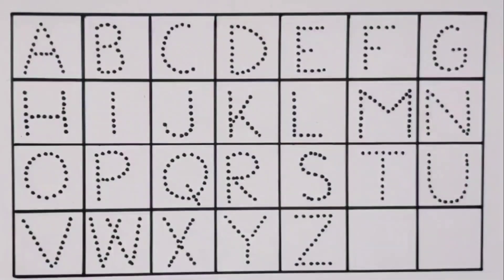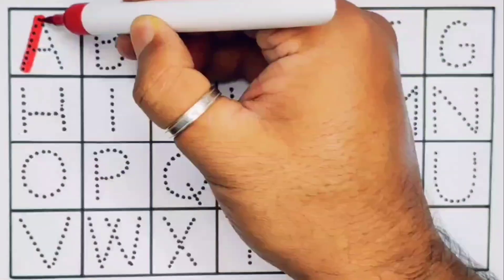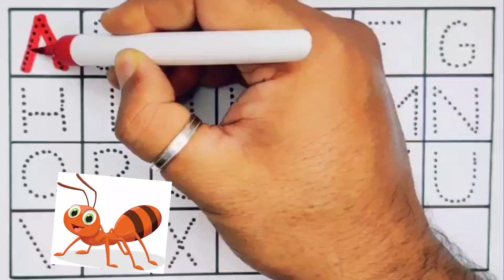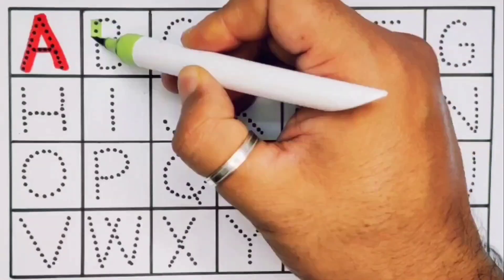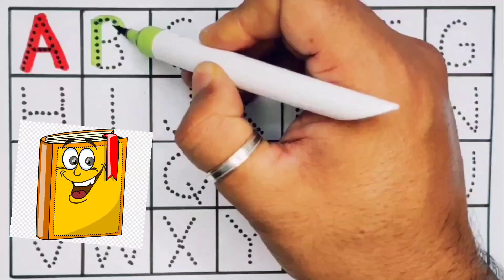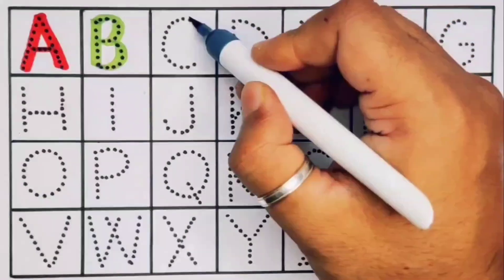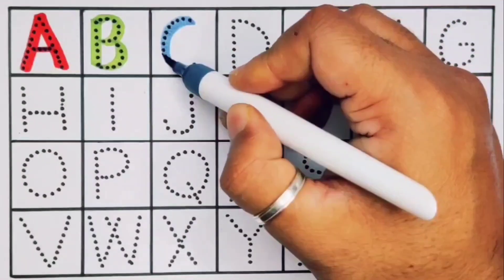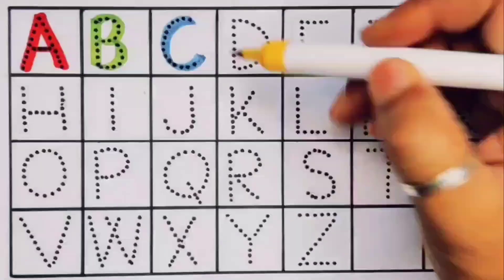First, A, A for ant. Next, B, B for book. Next, C, C for car. Next kids, D.